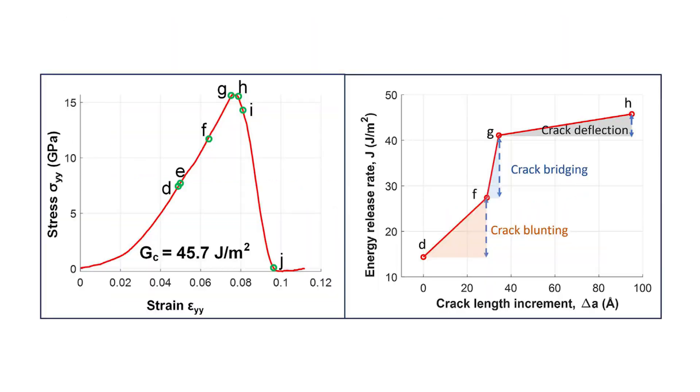Because of that patchwork structure, cracks can't just zip through it. The crack tip is deflected or slowed repeatedly. This phenomenon yields a much higher fracture energy, 8 times more than graphene in some measurements.